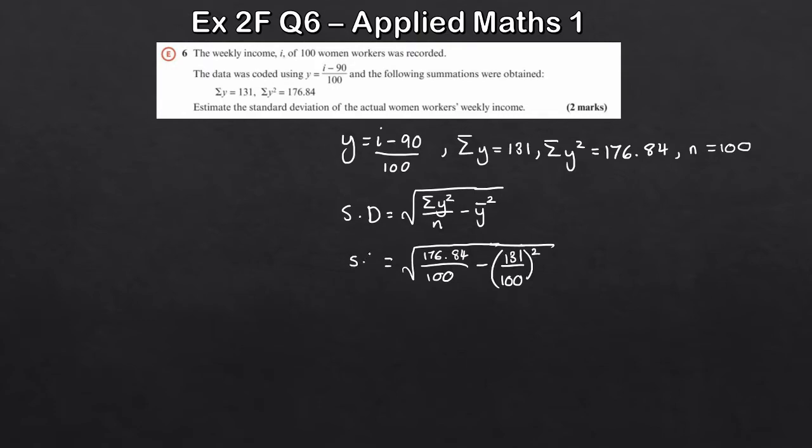So this is the coded standard deviation. Working this out here, just plug this into your calculator. What you get here is 0.229. But remember, this is the coded standard deviation. We want to estimate the actual standard deviation. So how do we do that? Now we take the equation we've got for the coding. And what we do here is we use this equation and solve it in terms of essentially my standard deviation here.